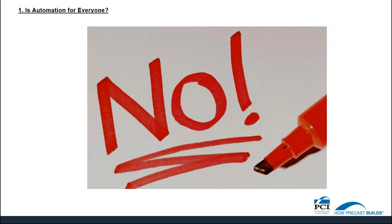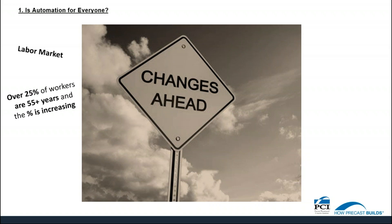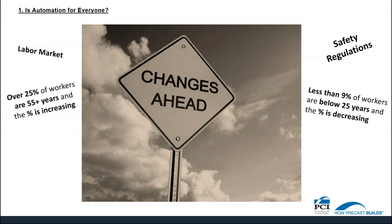Let's look at some of the pressures that are pushing people towards automation. The labour market is changing. In the construction and manufacturing industries, the number of workers over the age of 55 is increasing, while the number of workers under the age of 25 is decreasing. Over 25% of workers are 55 years and older, and this percentage is increasing. Less than 9% of workers are below 25 years, and the percentage is decreasing. Safety regulations are always changing, pushing many companies to look into ways of automating certain processes. In the current pandemic situation, social distancing is easier to manage when there are fewer people working in an area.